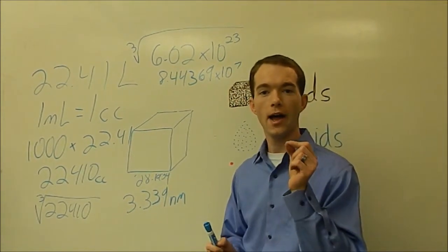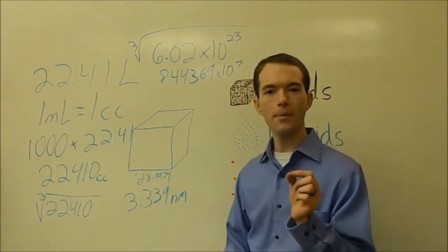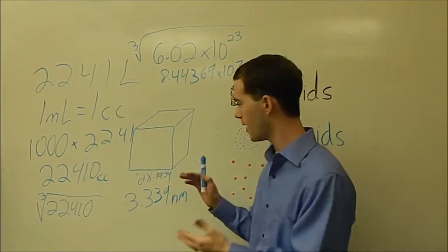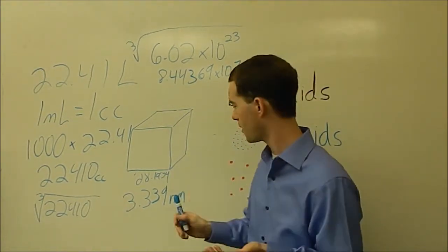To put that in perspective, a typical piece of paper is four thousandths of an inch thick. That means that over 30,000 air molecules could stack up in the thickness of a piece of paper.